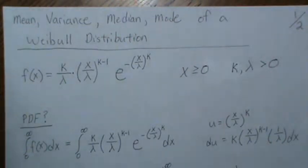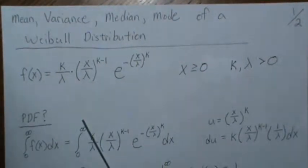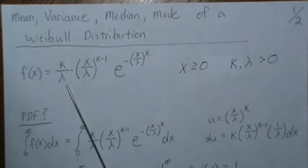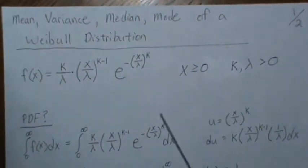Hello, in this video we're going to find the mean, the variance, the median, the mode of a Weibull distribution. This is a Weibull distribution and it has parameters k and lambda which are positive and x being the random variable which is greater or equal to 0.